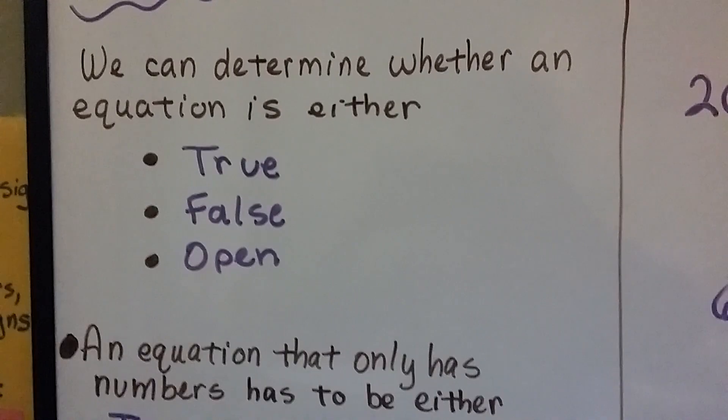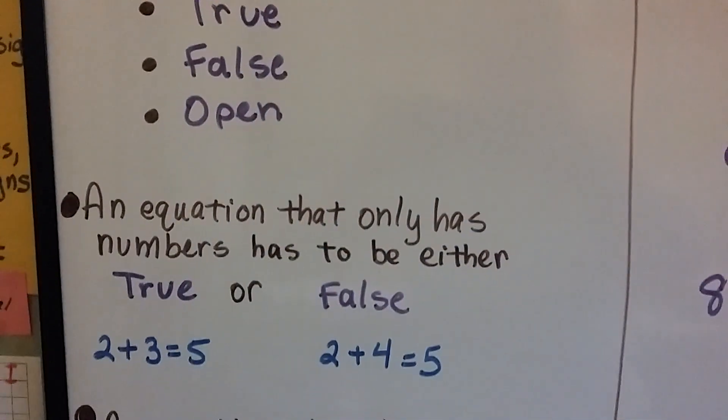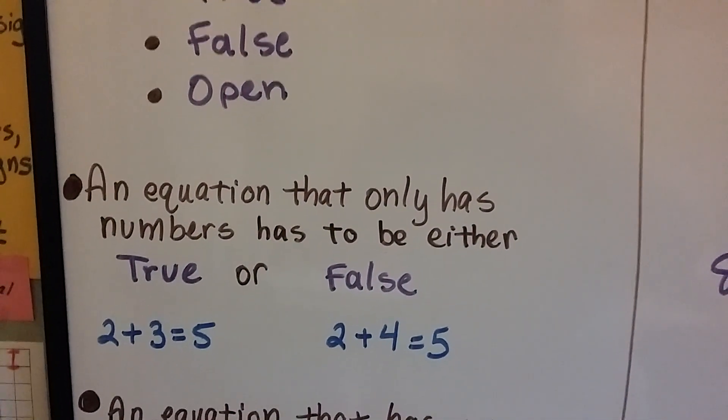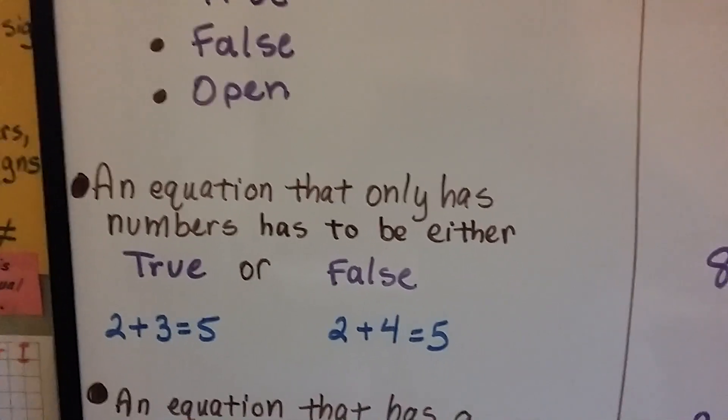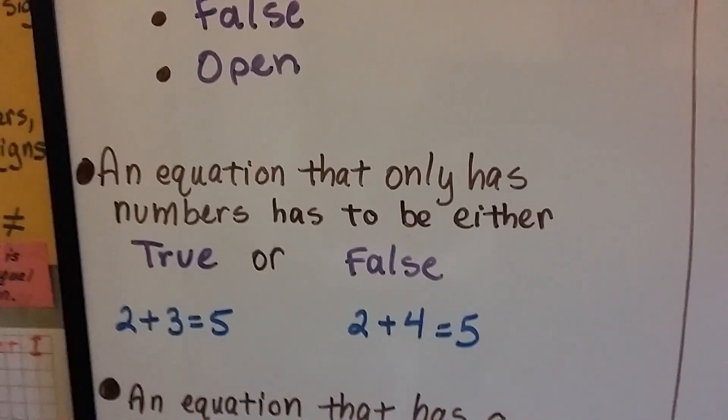We can determine whether an equation is either true, false, or open. An equation that has only numbers has to be either true or false. It's either true or it's false. It's going to be one or the other.